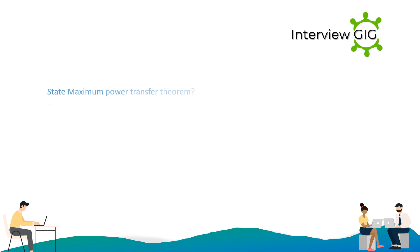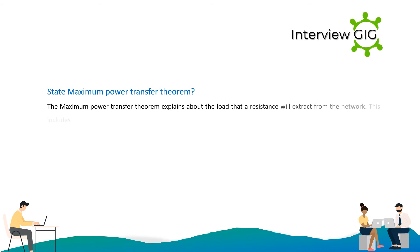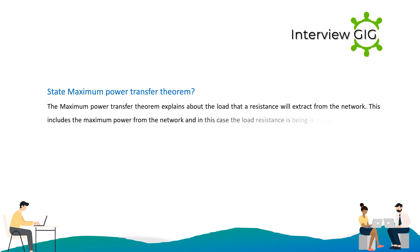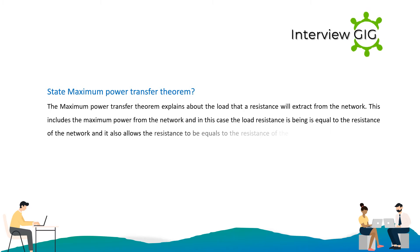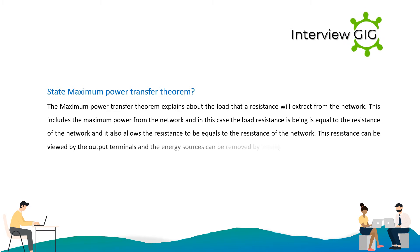State the Maximum Power Transfer Theorem. The Maximum Power Transfer Theorem states that a load resistance will extract maximum power from the network when the load resistance is equal to the internal resistance of the network. This resistance can be viewed from the output terminals when the energy sources are removed leaving only the internal resistance behind.